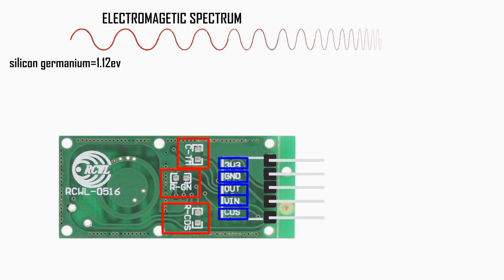RCDS is a resistor in parallel with the 1MΩ pull-up. Without RCDS, the lowest LDR resistance at which the output is enabled is 0.7 V. Adding resistance here decreases the LDR resistance of the enable/disable threshold. If the LDR resistance at the desired light level is less than 269K, you could add an external resistor in series with the LDR.